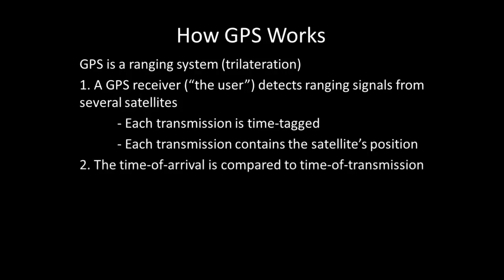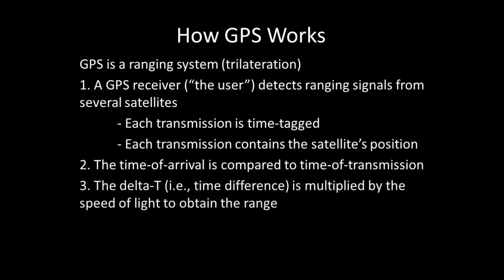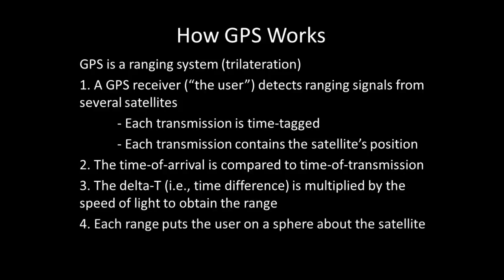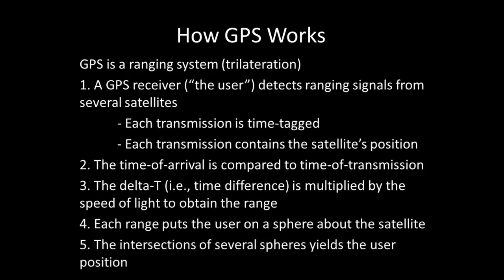The time of arrival is compared to the time of transmission. The delta T, or time difference, is multiplied by the speed of light to obtain the range. Each range puts the user on a sphere about the satellite. The intersections of several spheres yields the user position.